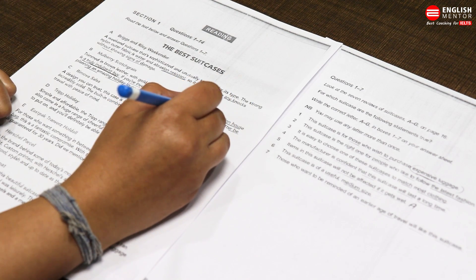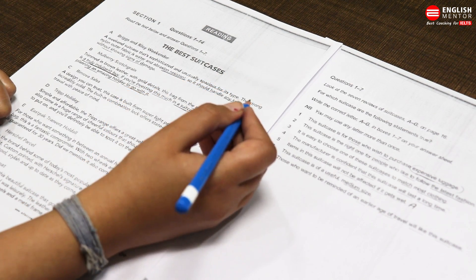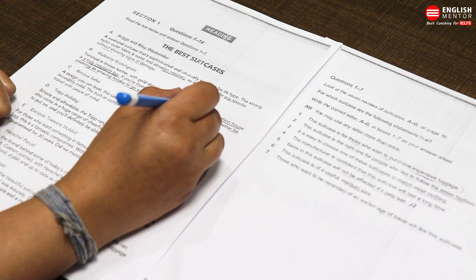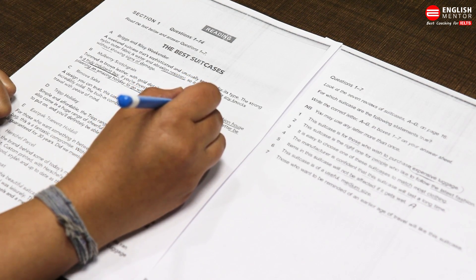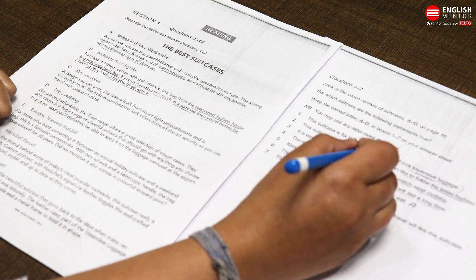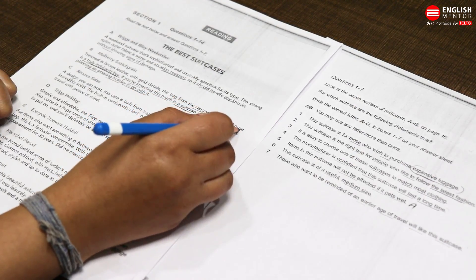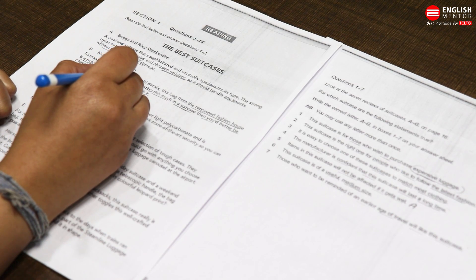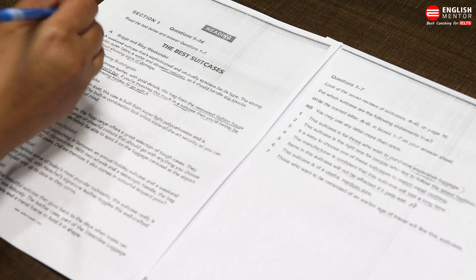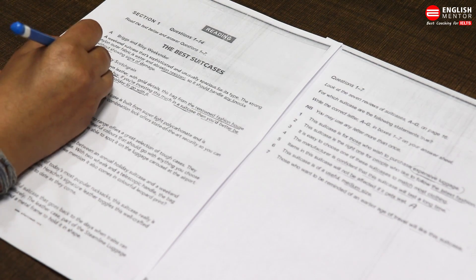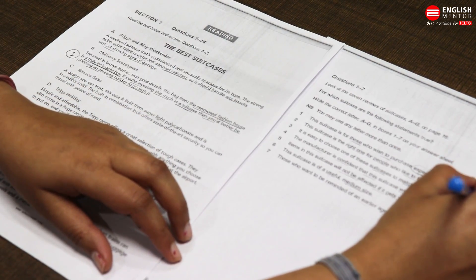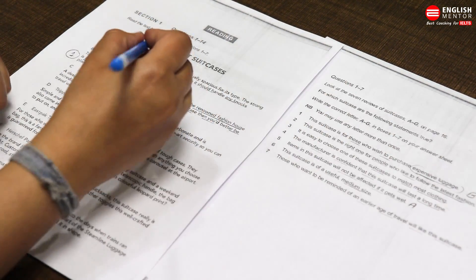If I check question number one: this suitcase is for those who wish to purchase expensive luggage. Renowned fashion house, truly indulgent to buy - this is paraphrasing of expensive and luxurious. So question number one is solved. For question one, I will mark option B. From A we solved question five.